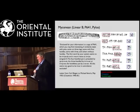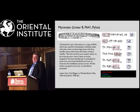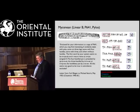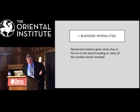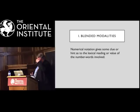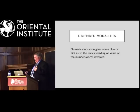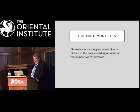They could have just used number signs — vertical lines — and we never would have known this, and this part of the decipherment would never have been possible. Sometimes the distinction between lexical and graphic is not so clear cut. I call these blended modalities — cases where we look at a sign and ask: is this a number word? Is this a number symbol? Is it a little of both? Often the numerical notation gives some clue.